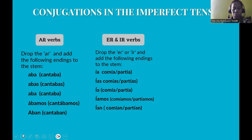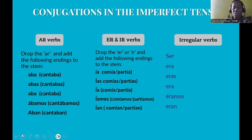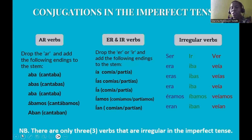There are only three verbs that are irregular in the imperfect tense. The first is 'ser': yo era, tú eras, él/ella era, nosotros éramos, ellos eran. The second is 'ir': yo iba, tú ibas, él/ella iba, nosotros íbamos, ellos iban. The third is 'ver': yo veía, tú veías, él/ella veía, nosotros veíamos, ellos veían. Remember, these are the only three irregular verbs in the imperfect tense.